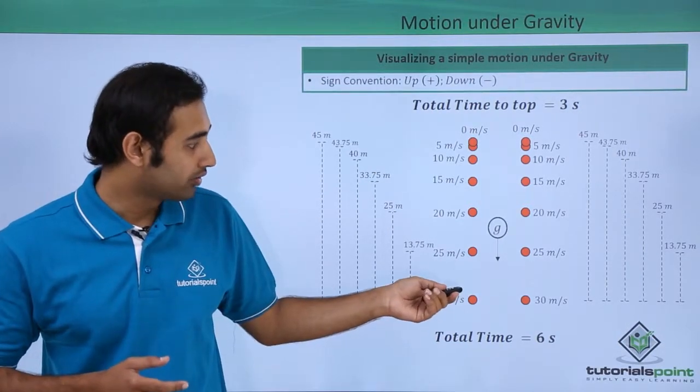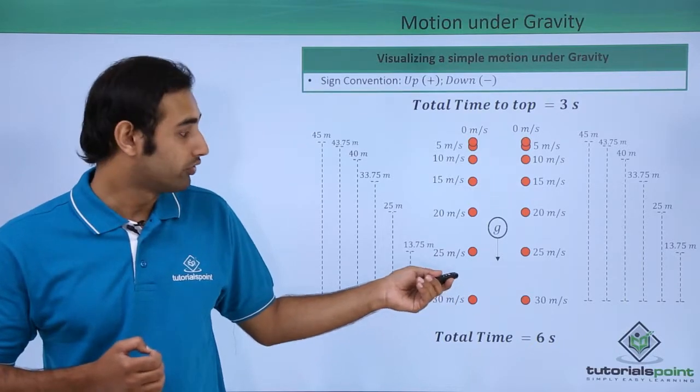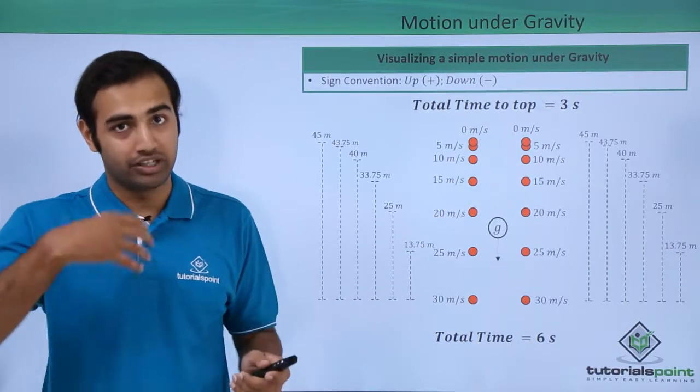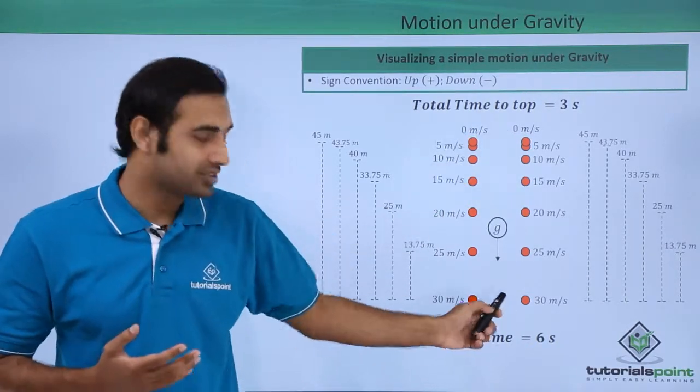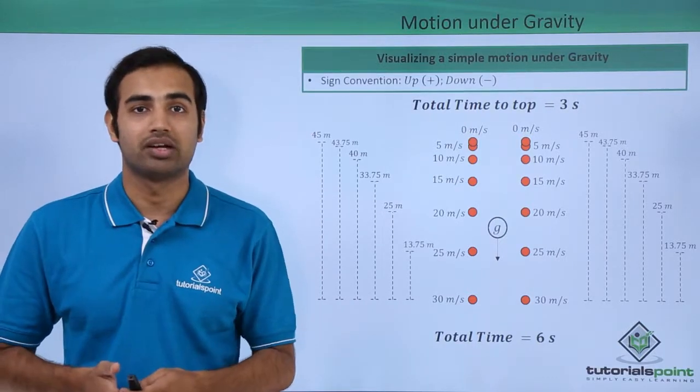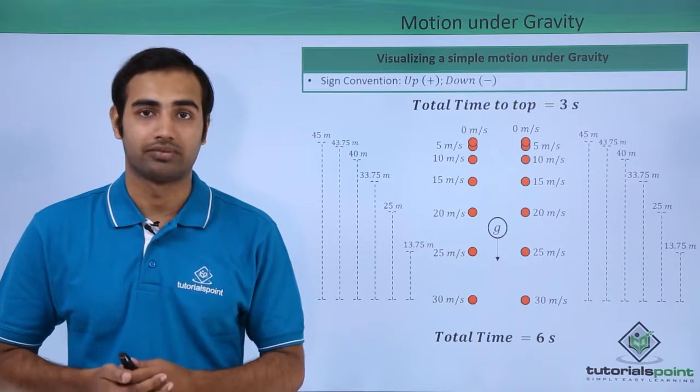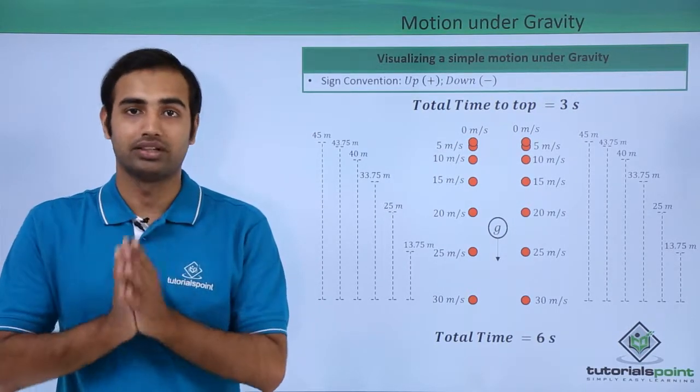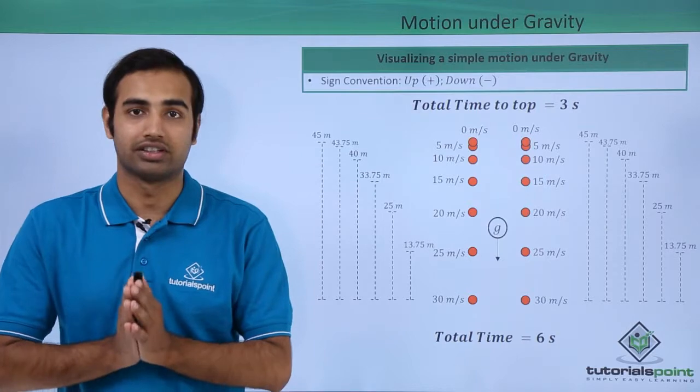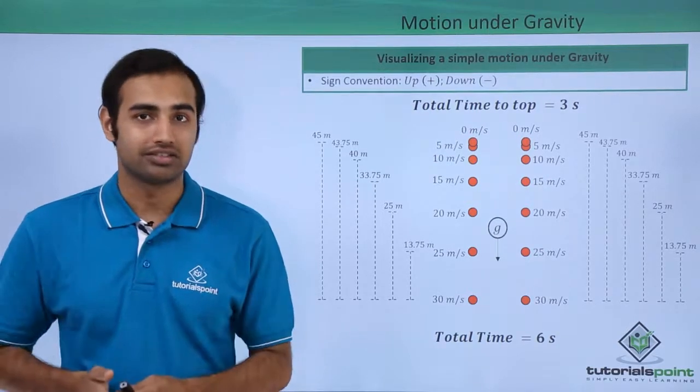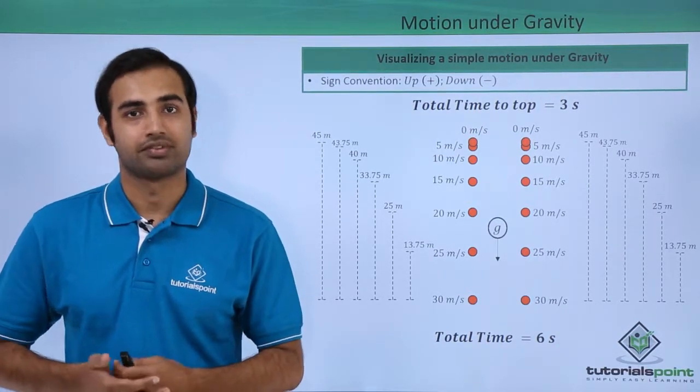Another important thing is that the ball had a velocity of 30 meters per second upwards when it was thrown. When it came back to the same height, it had a velocity of 30 meters per second once again, this time pointing downwards. That's the only difference. Please take a good look at this diagram and try to understand the motion under gravity physically so that you have ease in calculations later when you deal with problems. Thank you.